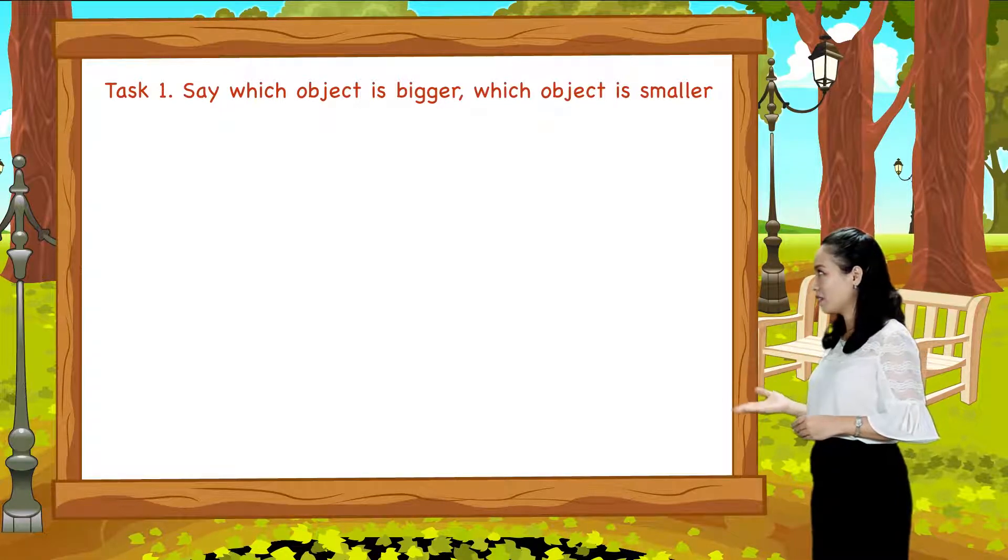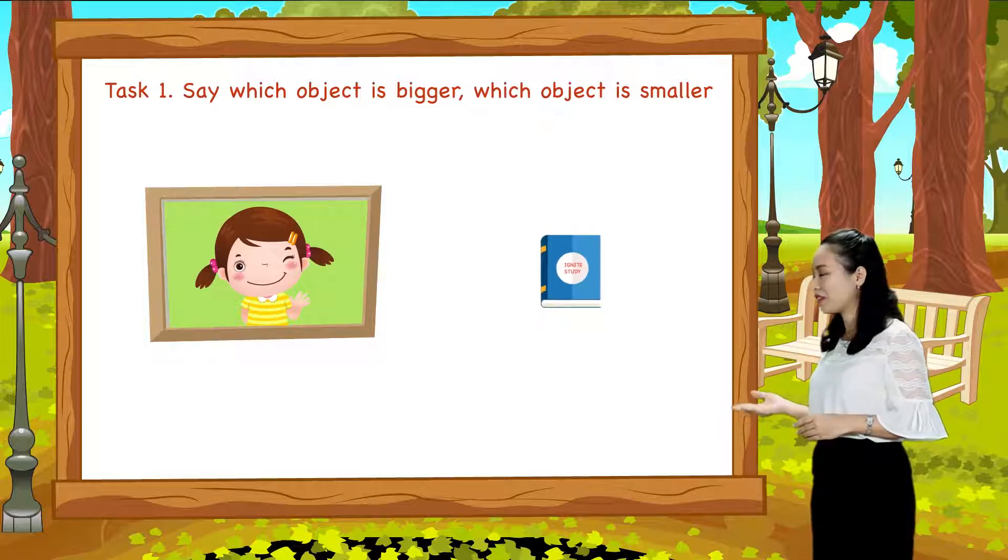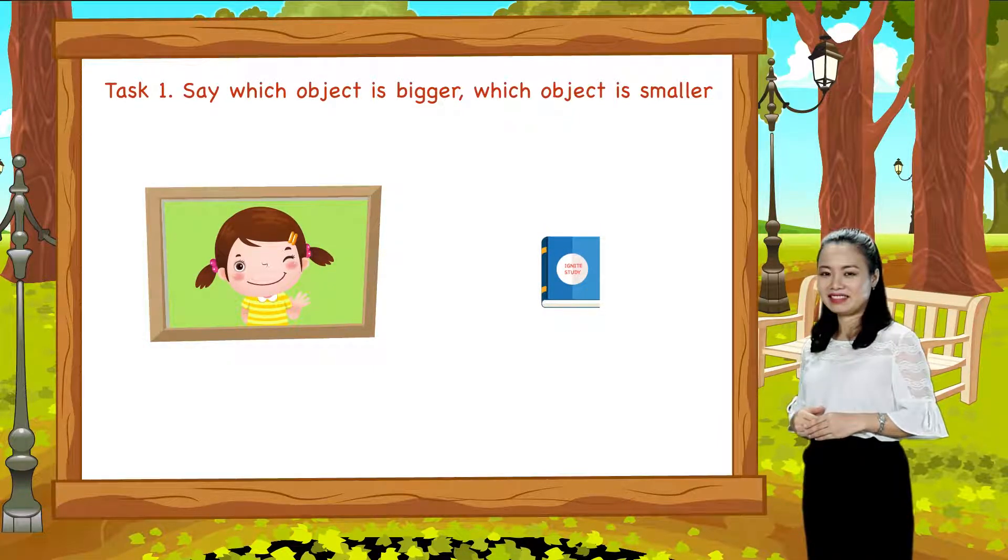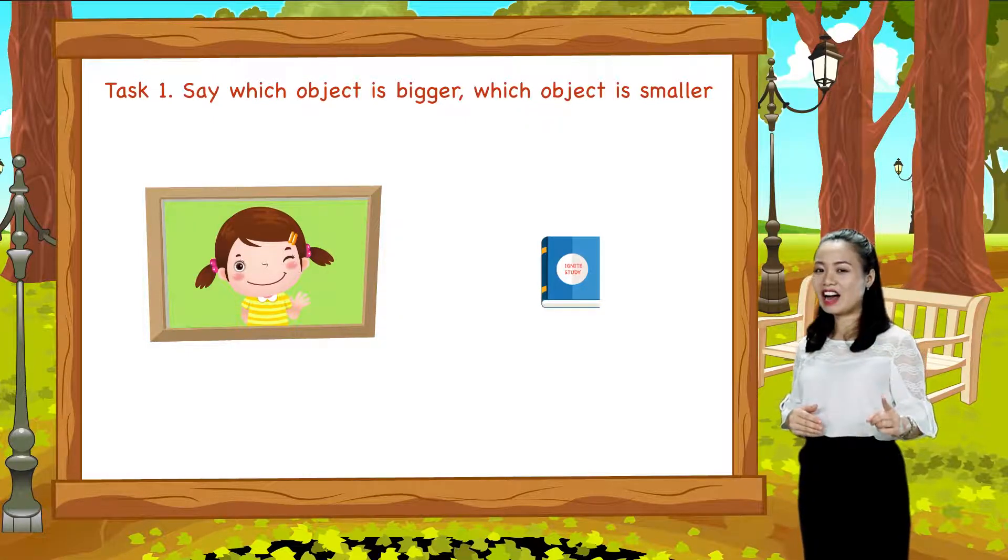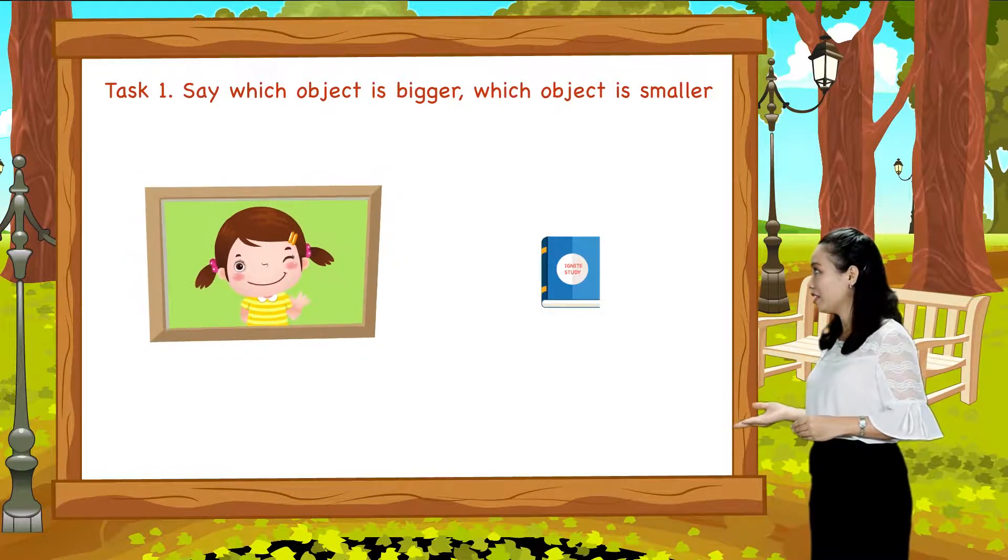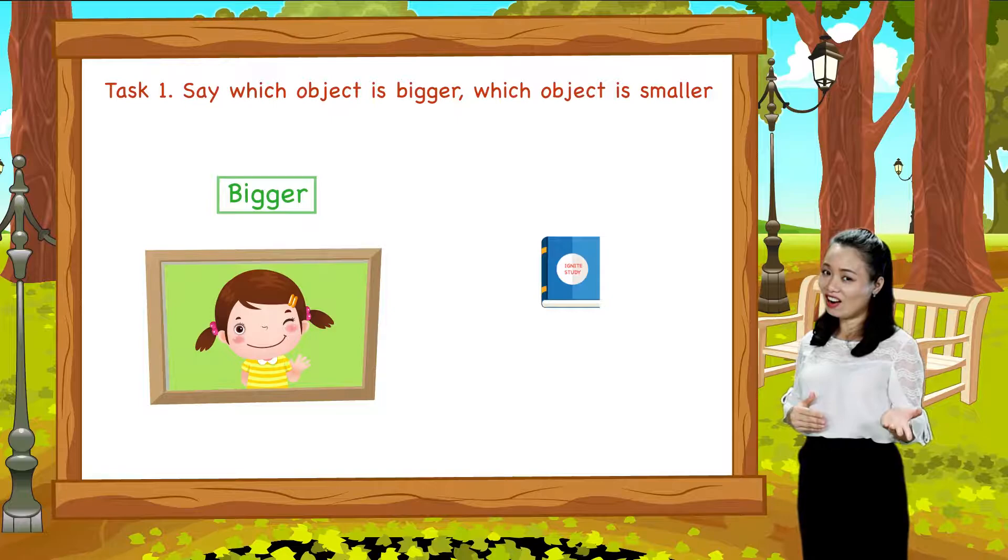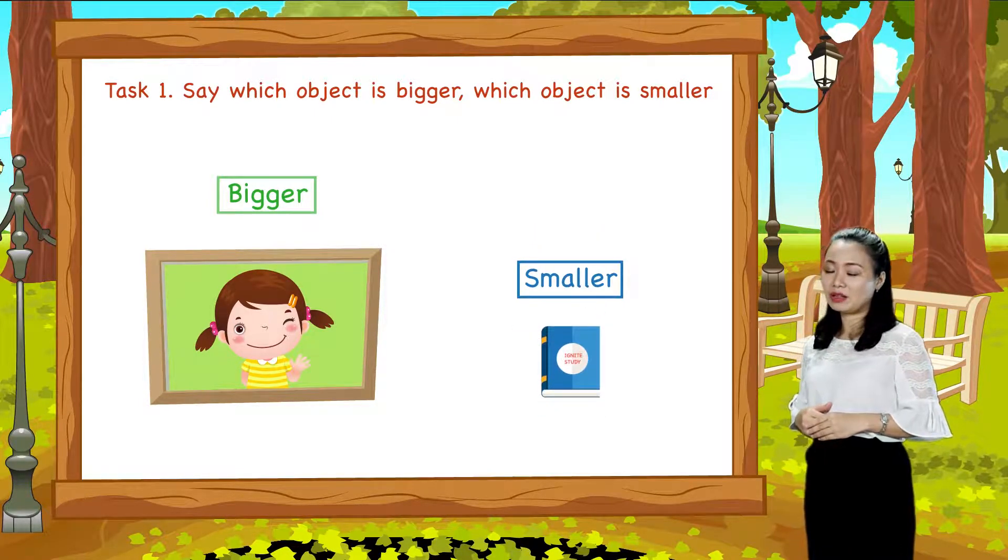Look, this is a picture and this is a book. Which one is bigger? Which one is smaller? So the picture is bigger than the book or the book is smaller than the picture.